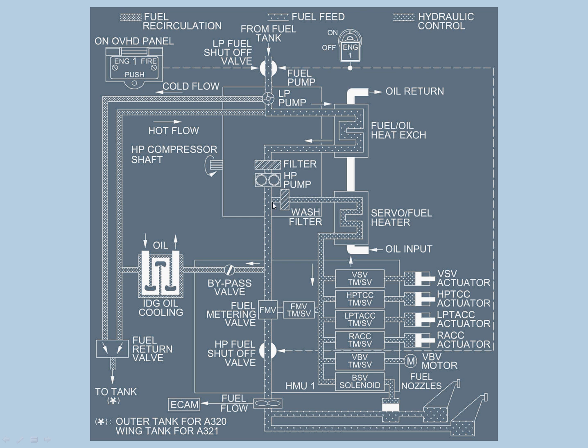From here, it splits into two. Filtered fuel goes to servo fuel heater, which heats the fuel to eliminate ice particles that might damage the HMU servo valves. Some fuel also goes to the fuel return valve. IDG oil cooling is done by the fuel, which is cold. Cold fuel is added so that some hot flow only goes back to the tank, maintaining about 100 degrees centigrade before it enters back into the tank.